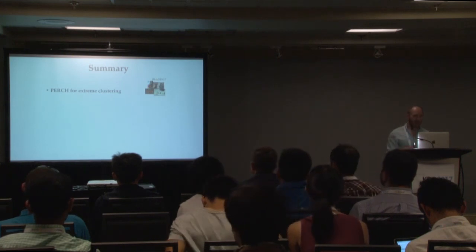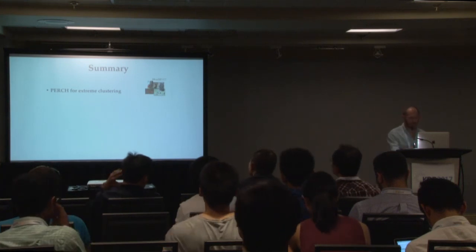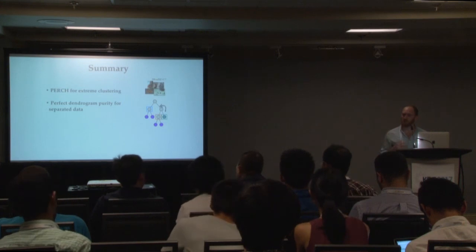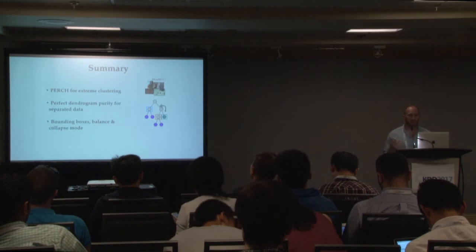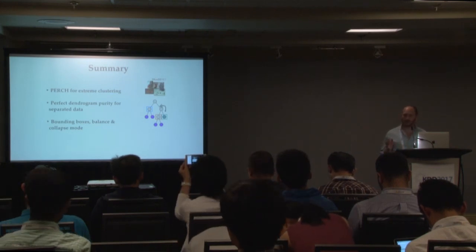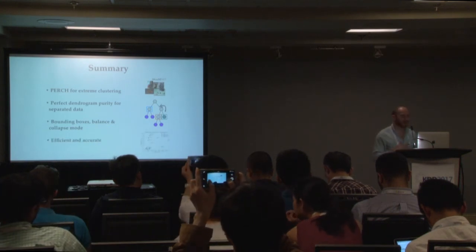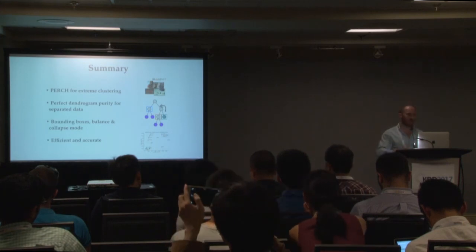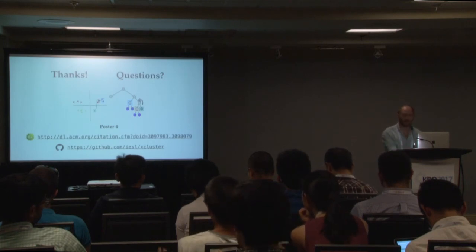In summary, we've discussed PERCH and the problem of extreme clustering. PERCH produces trees with perfect dendrogram purity on separated data sets. We've described bounding box balance rotations and collapse mode that improve efficiency. PERCH is efficient and accurate compared to other tree-building and flat clustering baselines. Thank you very much for your attention, and I'll be happy to take questions.